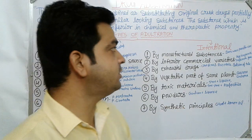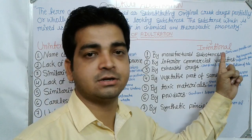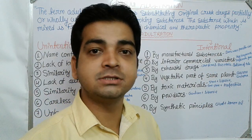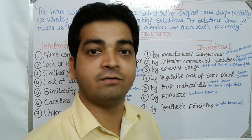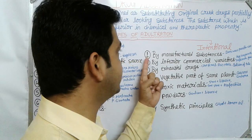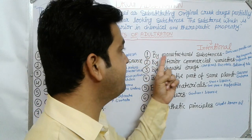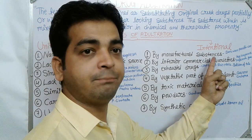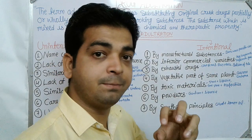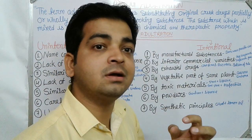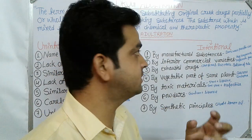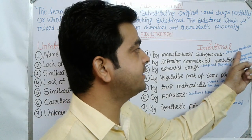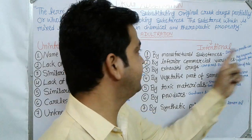Now, when we talk about intentional adulteration, it is done knowingly to increase the bulk quantity for marketing purposes. The first type is by manufactured substances — substances manufactured only for the purpose of adulteration. For example, beeswax is adulterated by paraffin wax.